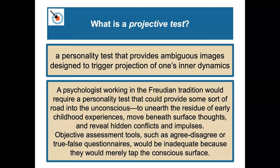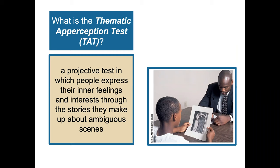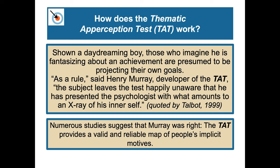Projective testing provides ambiguous images designed to trigger projection of one's inner dynamics. A psychologist working in the Freudian tradition would need a personality test that could provide a road into the unconscious mind — unearthing residue of early childhood experiences and revealing hidden conflicts and impulses — rather than objective agree-disagree or true-false questionnaires. The Thematic Apperception Test, or TAT, is an example: people express their inner feelings and interests through the stories they make up about ambiguous scenes. For instance, those shown a daydreaming boy who imagine he is fantasizing about achievement are presumed to be projecting their own goals. As Henry Murray, who developed the TAT, said: the subject leaves happily unaware that he has presented the psychologist with what amounts to an X-ray of his inner soul.